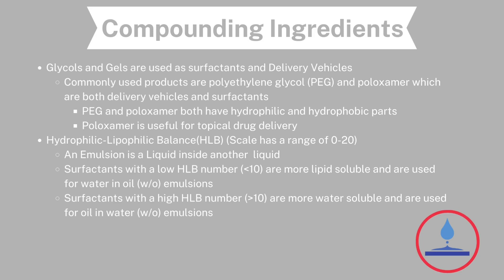Glycols and gels are used as surfactants and delivery vehicles. Commonly used products are PEG and poloxamer, which are both delivery vehicles and surfactants and both have hydrophilic and hydrophobic parts. Poloxamer is useful for topical drug delivery. These have a hydrophilic-lipophilic balance — it is a scale that ranges from 0 to 20.